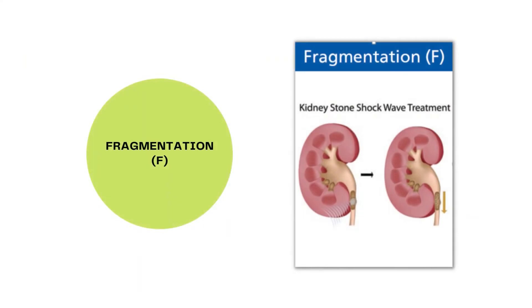Today we are looking at the root operation Fragmentation, which carries a character value of F. Root operations are the most important aspect of building an ICD-10-PCS code. Root operations define the objective or the goal of the procedure — what the surgeon is trying to accomplish becomes the root operation. Always read the definitions of the root operation and compare it to the actual procedure performed so that you get the correct root operation.